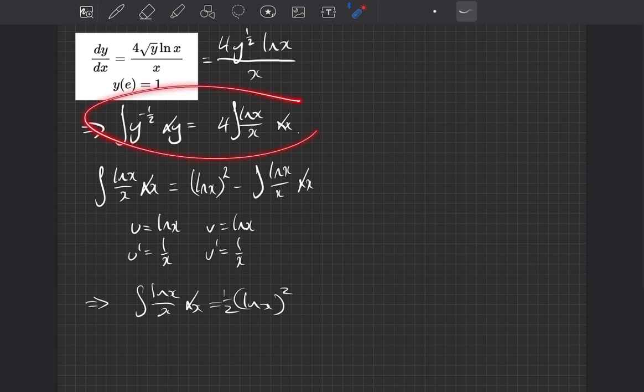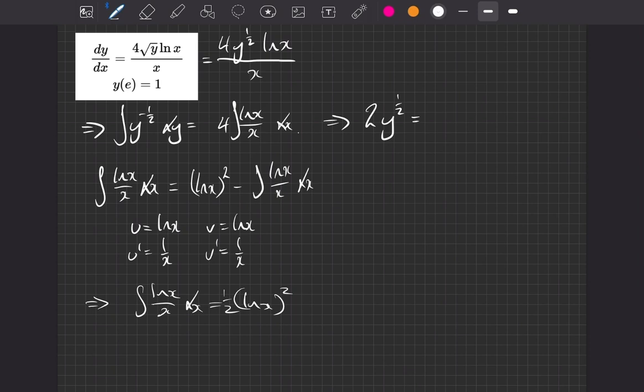So if we carry on from up here now, the left hand side, well, that's going to integrate to give us y to the half, divided by a half, which is the same as times by 2. The right hand side then, we have the 4 from here. And this thing, we know, is now our half log x squared. So the 4 times by the half gives us a 2. And the log x squared is just the log x squared. Beautiful.